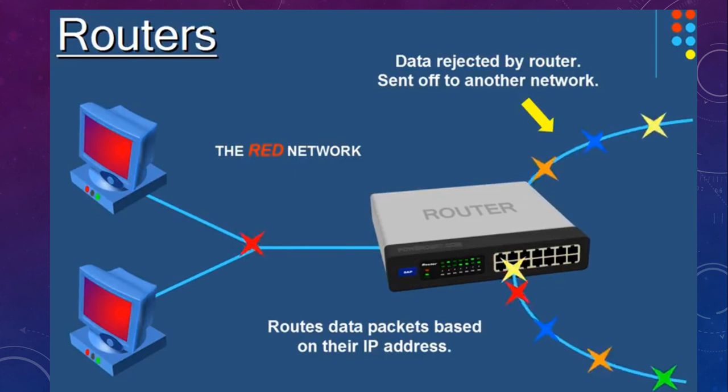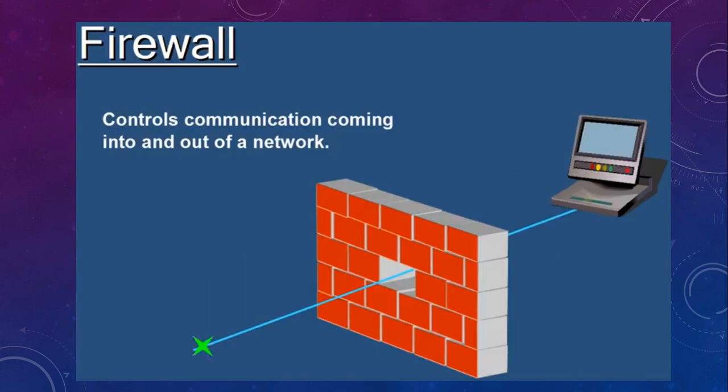Routers are layer 3 devices, and switches are layer 2 devices because switches work only on the basis of MAC addresses, while routers work on the basis of IP addresses.